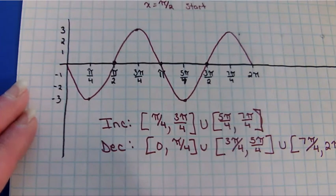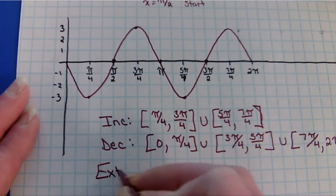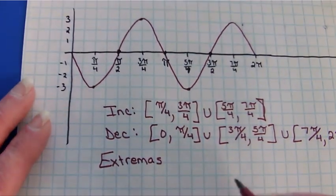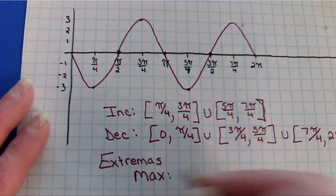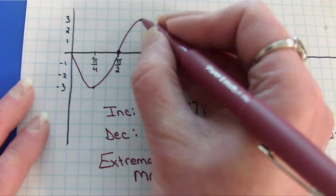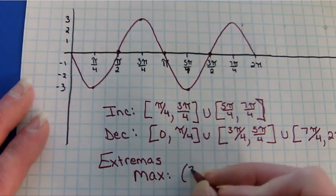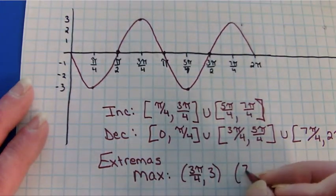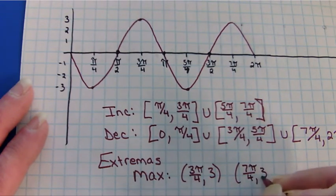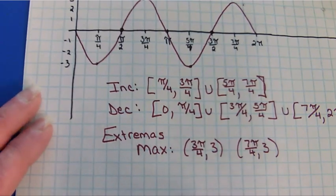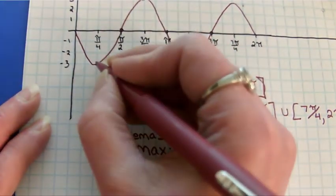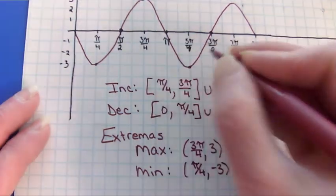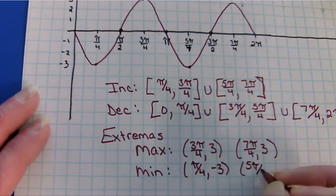The next question asks about extremas. So let's talk about extremas. Extremas are your extreme y values, so your maximums and your minimums. So I'm going to start with the maxes. I have a maximum at this point, and so that would be 3π/4 comma 3, and then I have another one at 7π/4 comma 3. Minimums: my minimum is at π/4 negative 3, and another one is at 5π/4 negative 3.